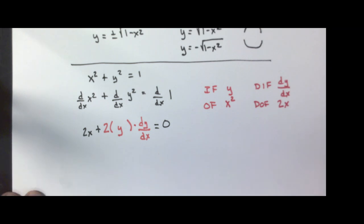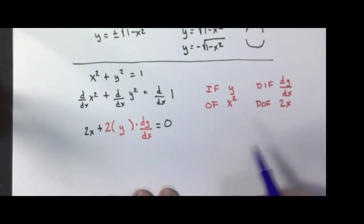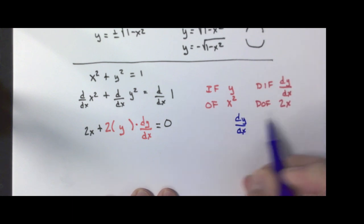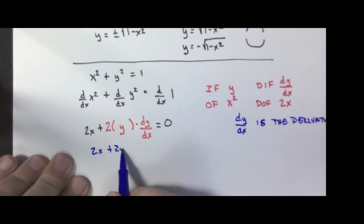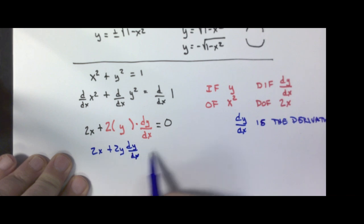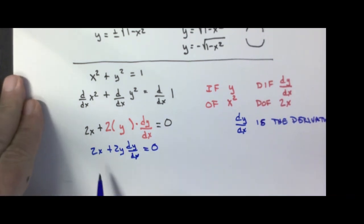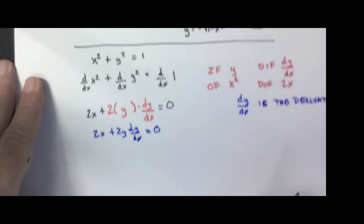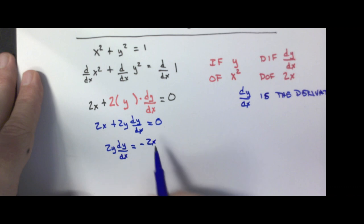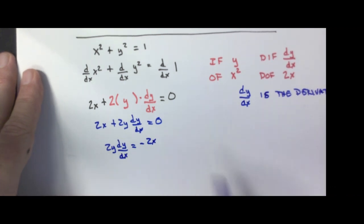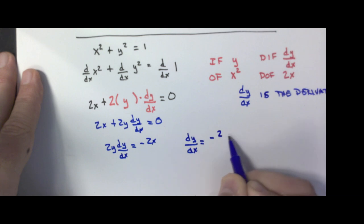We're going to rewrite this and solve for dy/dx. So we get 2x plus 2y dy/dx equals 0. Subtracting 2x from both sides gives 2y dy/dx equals negative 2x. Dividing both sides by 2y, we get dy/dx equals negative 2x over 2y, which simplifies to negative x over y.